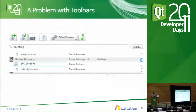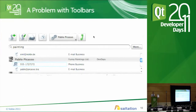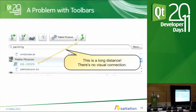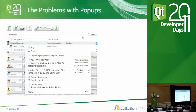Another problem is with the toolbars we use in that application. If you want to dial a number, there's quite some screen distance from the number to the dial button up here. And if you have an entry that is quite far down the list, the distance becomes even longer. This is not good — it's another problem in the user interface.